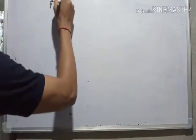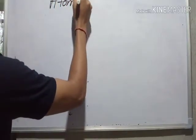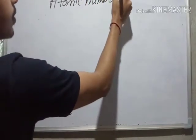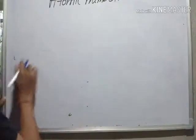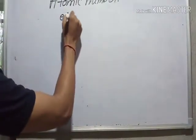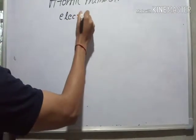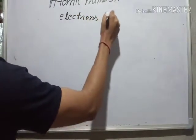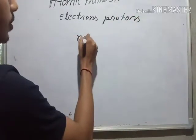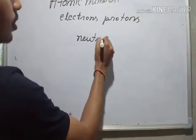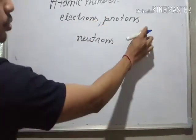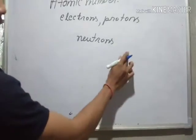So what is atomic number? You know that an atom contains three types of particles which are known as electrons, protons, and neutrons. Electrons which are negatively charged, protons which are positively charged, and neutrons which are neutral.